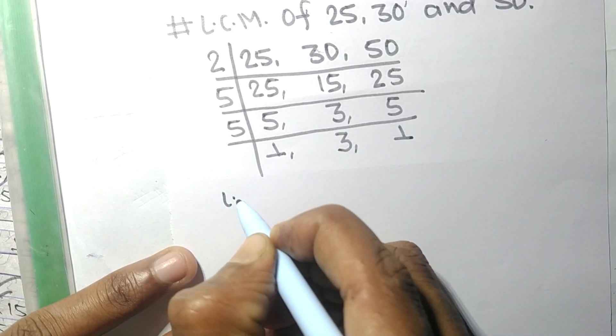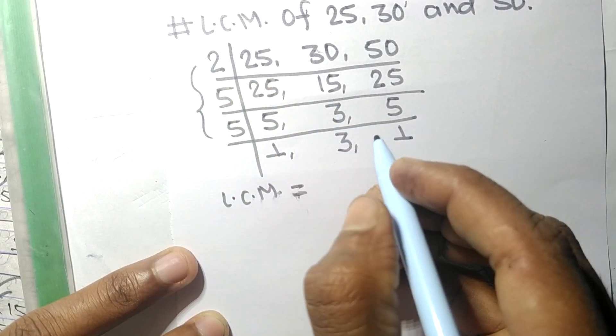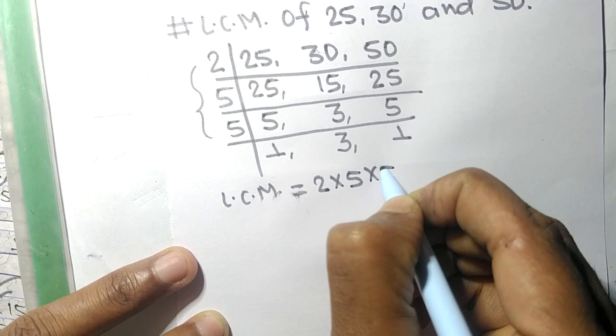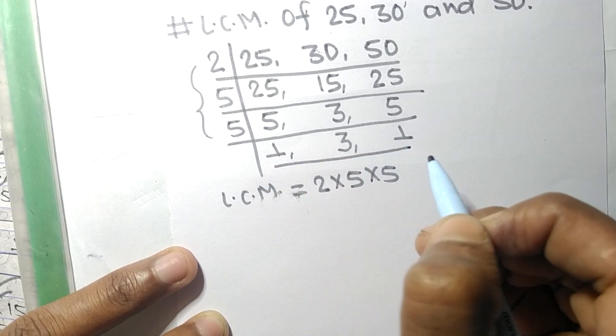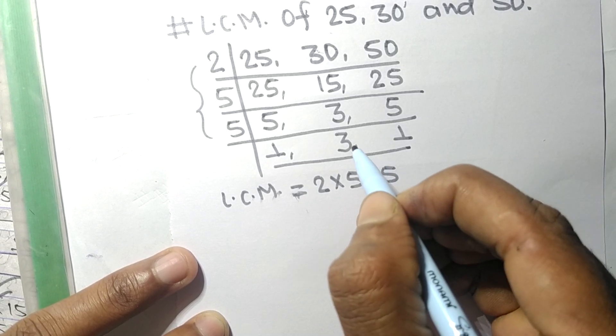So its LCM is equal to, from this side, it is 2 times 5 times 5 and from this side, we choose the numbers greater than 1, that is 3.